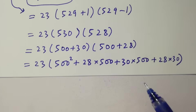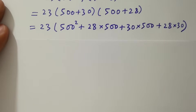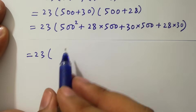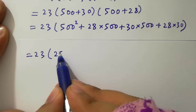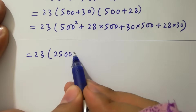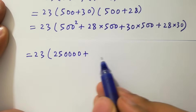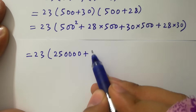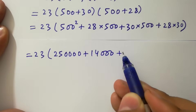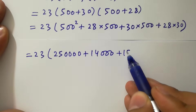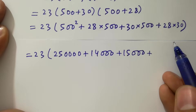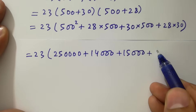23 is carried forward. 500 squared is 250,000. Then 28 times 500 is 14,000. 30 times 500 is 15,000. And 28 times 30 is 840.